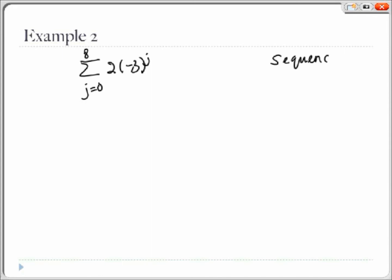So looking at the sequence, writing out a few terms, we get 2, negative 6, 18, and negative 54. So we see that a equals 2 and r equals negative 3.